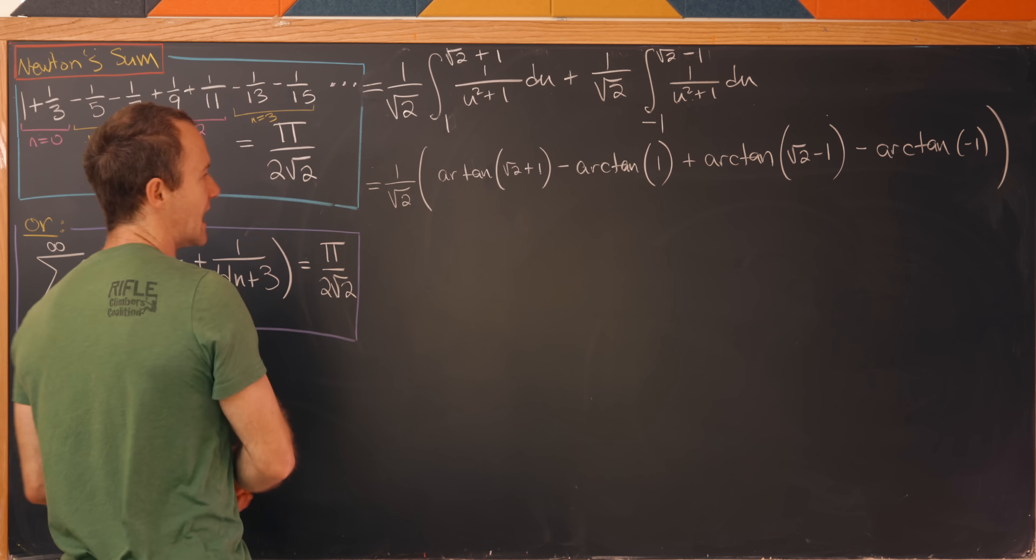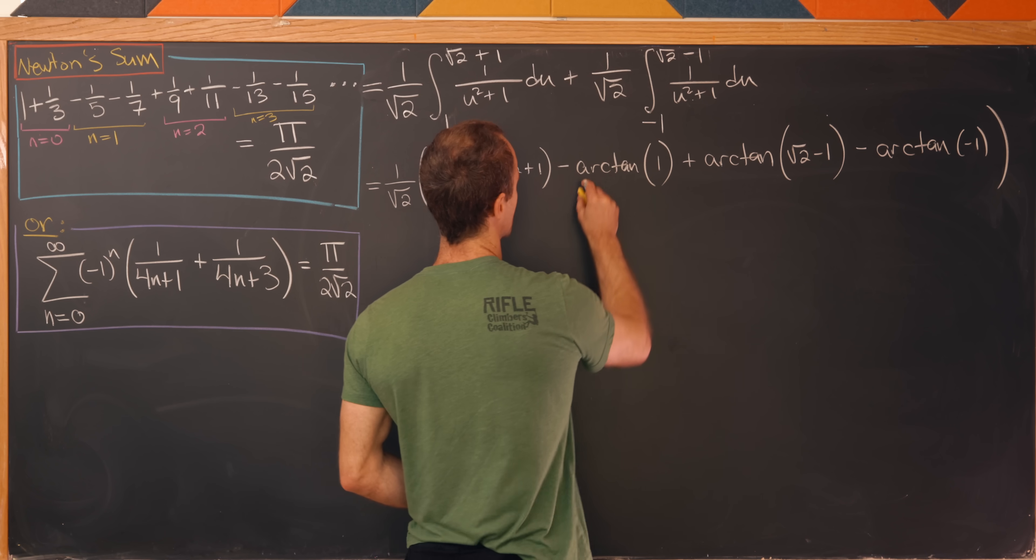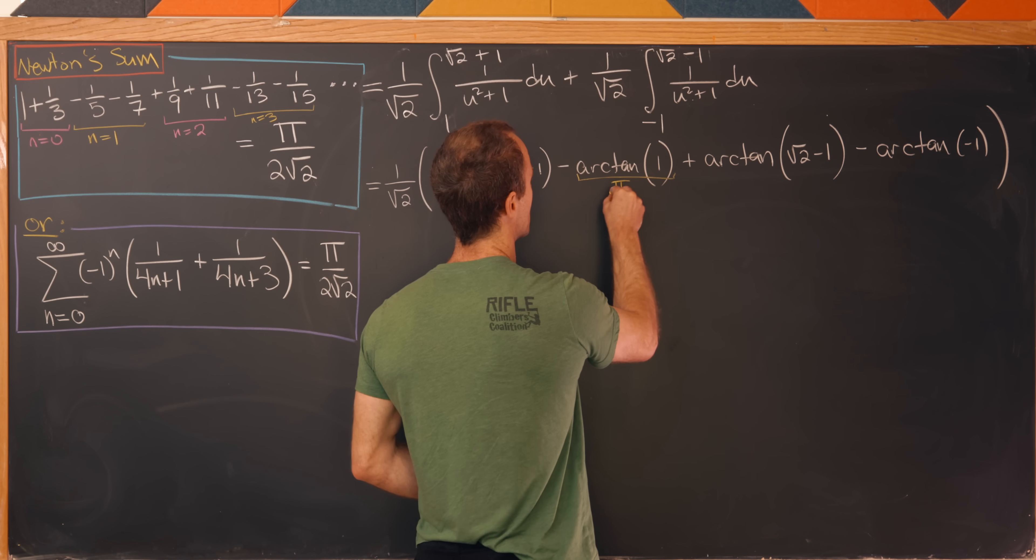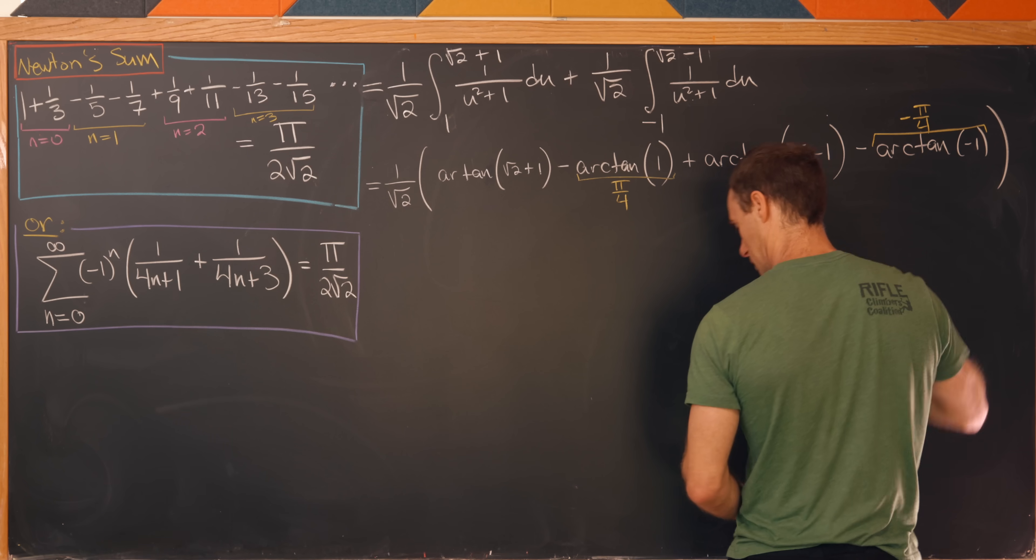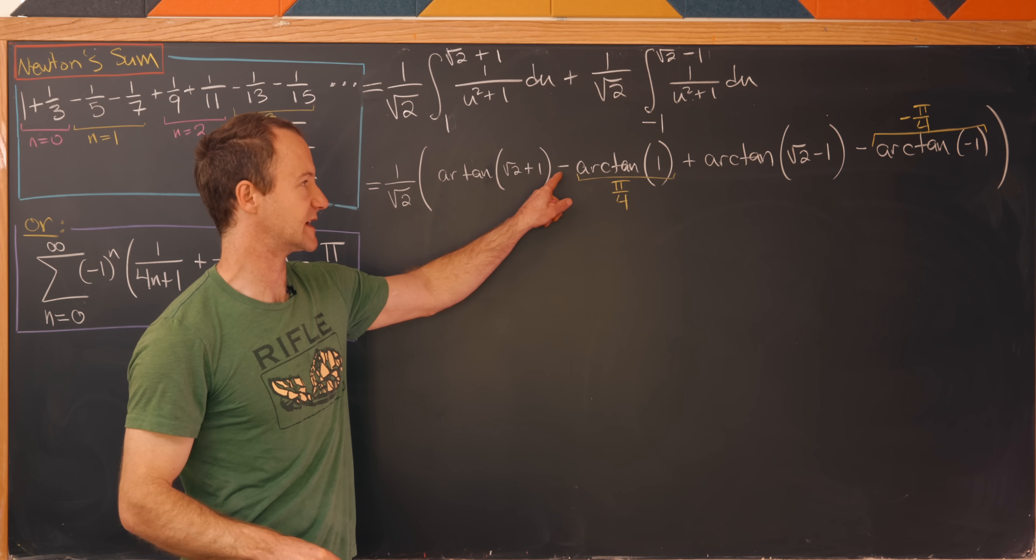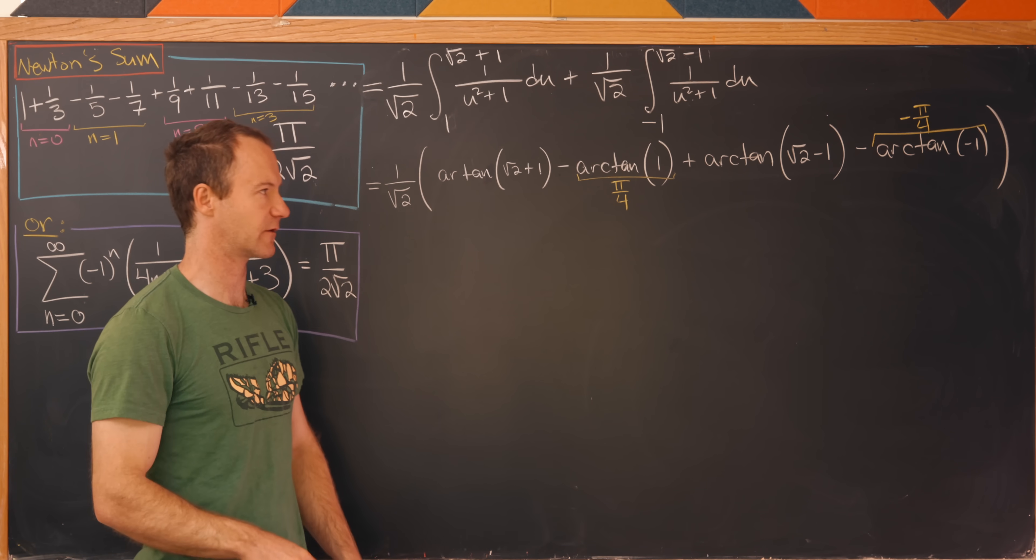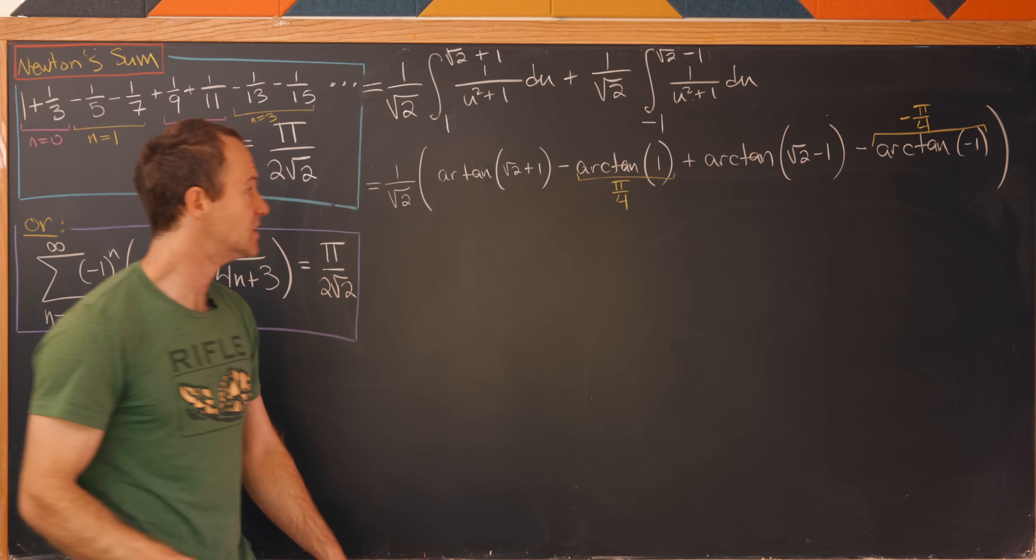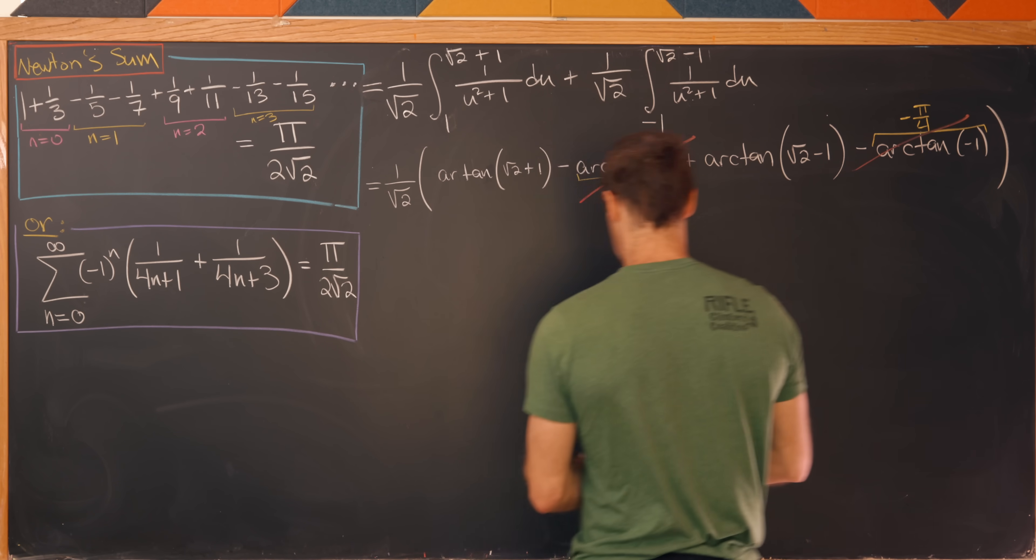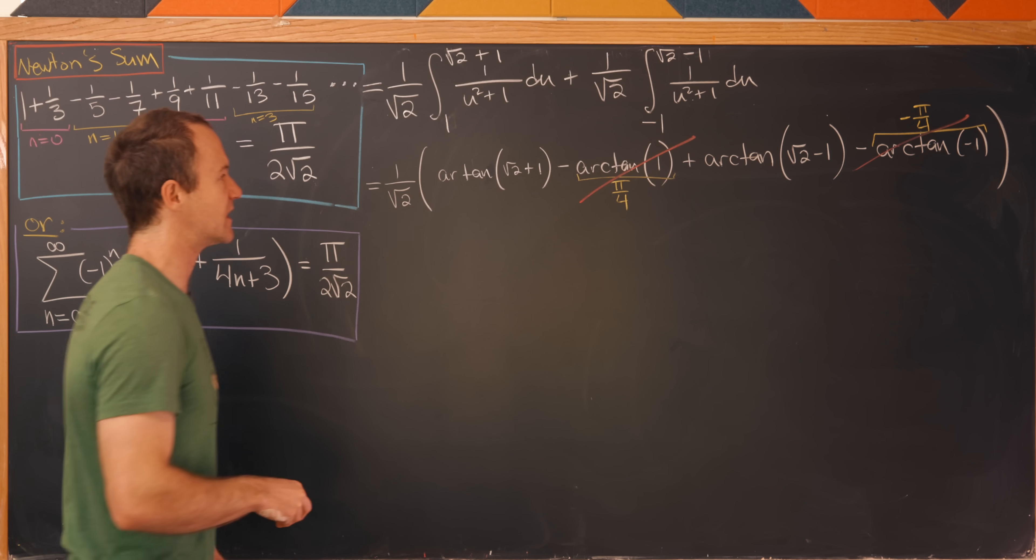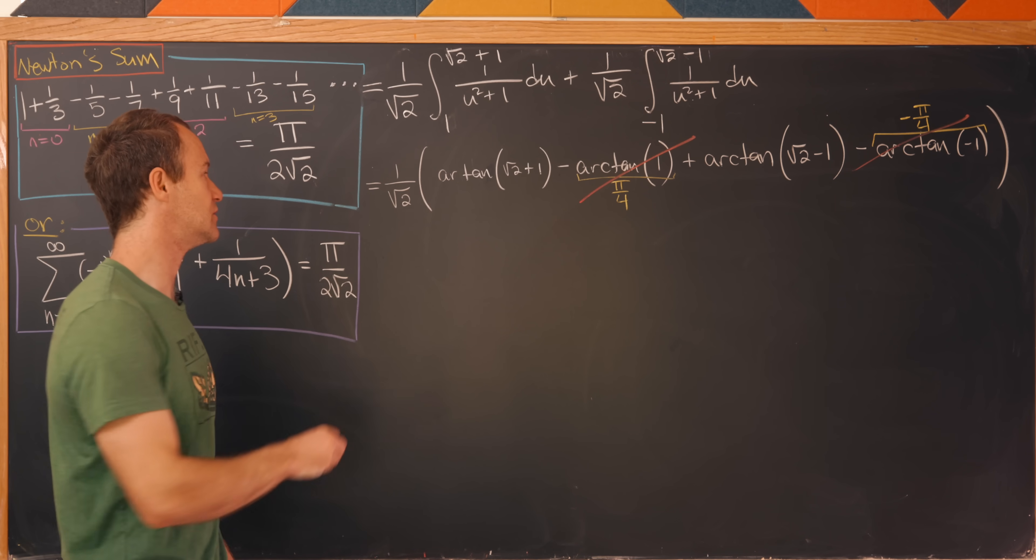But now the arctan of 1 is well known to be π/4, whereas the arctan of -1 is known to be -π/4. So let's notice this π/4 is connected to a minus sign, and that -π/4 is also connected to a minus sign. So when all is said and done, these two will cancel each other. That'll leave us the sum of these two arctans.